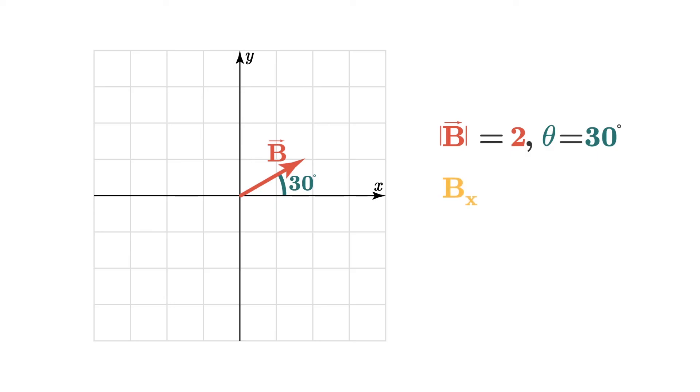then the x component is just the magnitude times the cosine of the angle, so 2 times the cosine of 30. And the y component is just the magnitude times the sine of the angle, so 2 times the sine of 30.